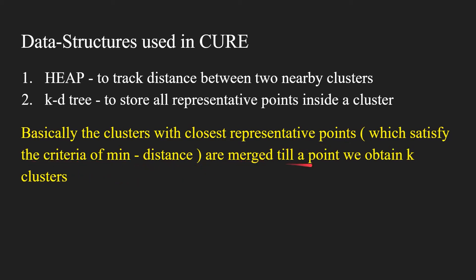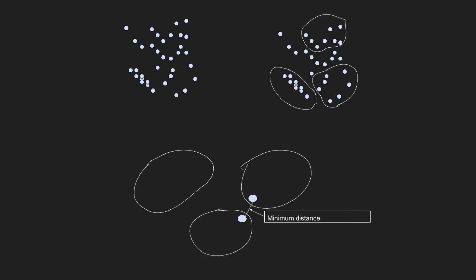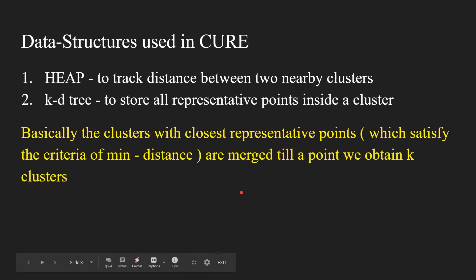Clusters whose representative points satisfy a minimum distance criteria are merged together until we obtain k clusters. For example, if I have six clusters and find that cluster A and cluster B are too close — their distance is below my threshold — I merge them into one cluster. Here, if the minimum distance threshold is set to three and my distance is less than that, the two clusters get combined. K is the number of clusters decided by the user before running the algorithm.